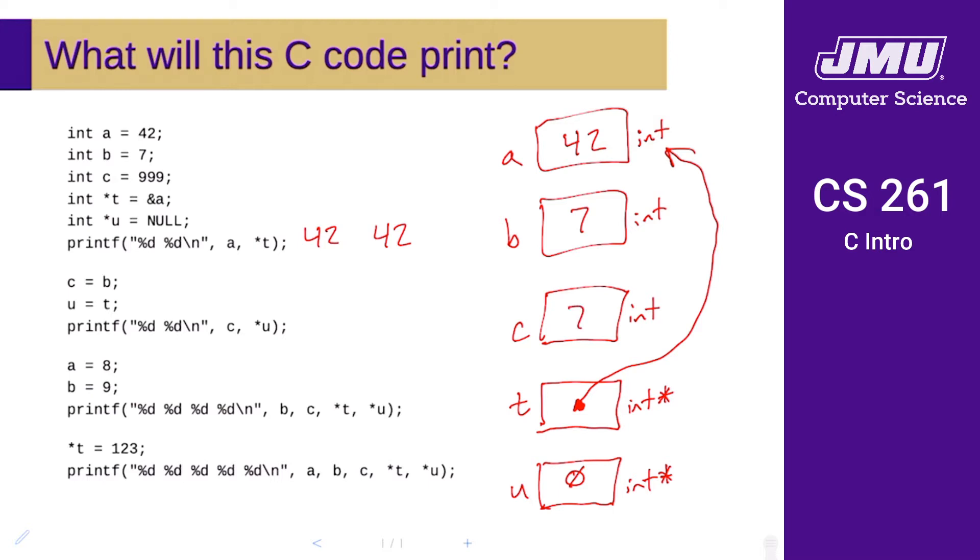Now we set u to be equal to t. We take the value of t and copy it into u. Because t is a pointer, this means that u is now also going to be a pointer to the same thing that t points to. What's really happening under the hood here is that the value of t, which as you'll remember is the address of a, that value of t is copied into u.